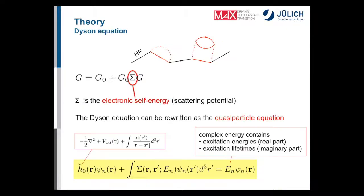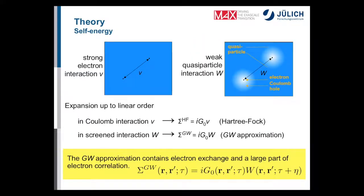Up to this point we don't know how to perform calculations because we don't know the exact self-energy — we must resort to approximations. A very popular one is, of course, the GW approximation.